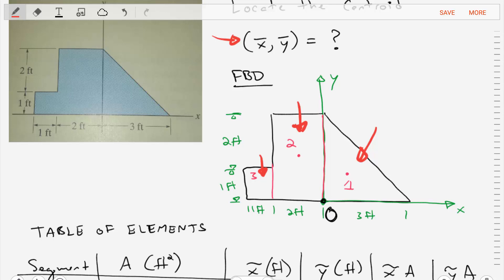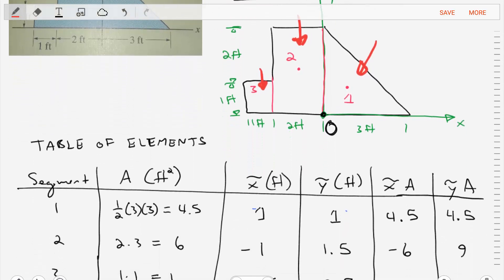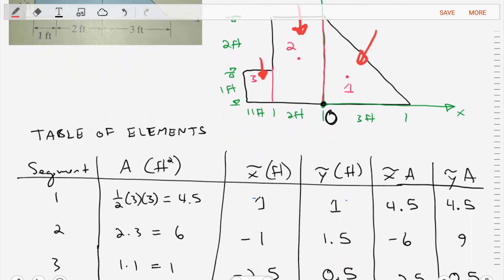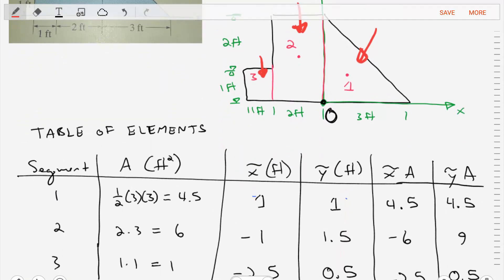The next thing we're going to do is create a table of elements. This is where we express what is the amount of area for each segment. What is its x and y centroid, which we'll call x tilde and y tilde. And then also an expression for x tilde times A and y tilde times A.